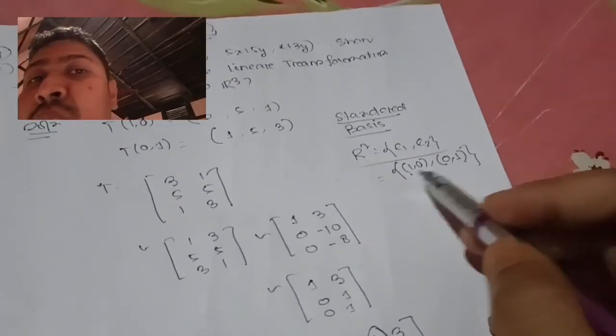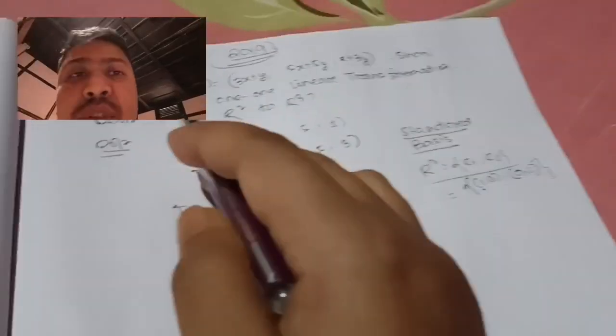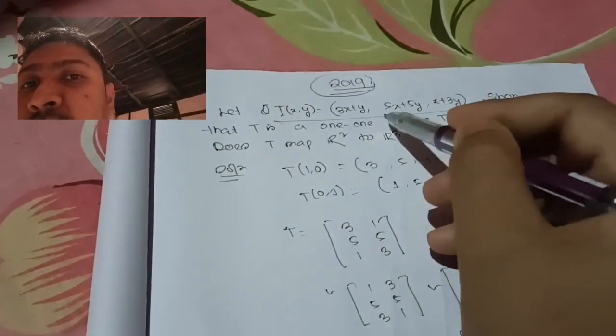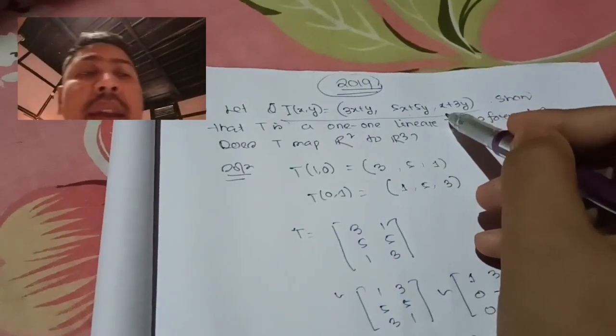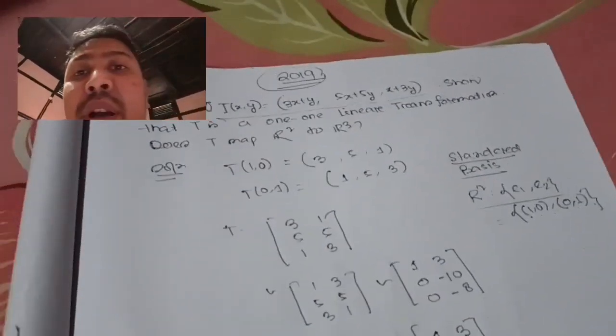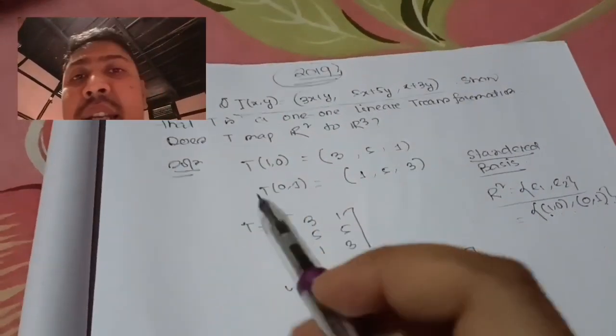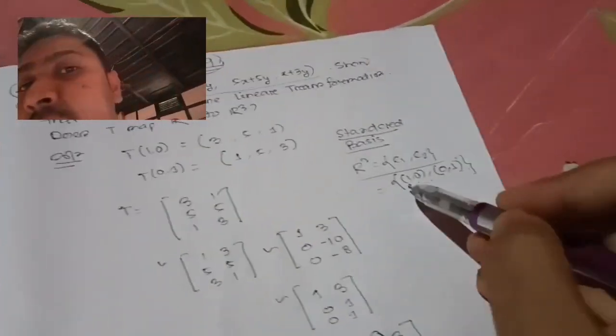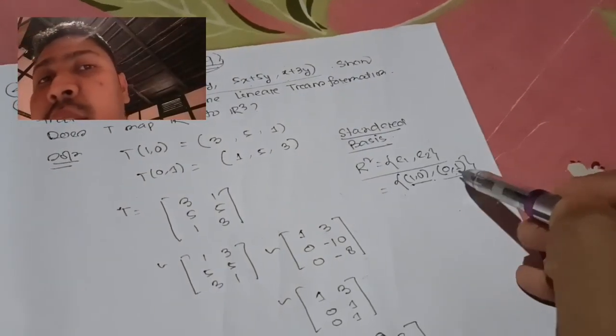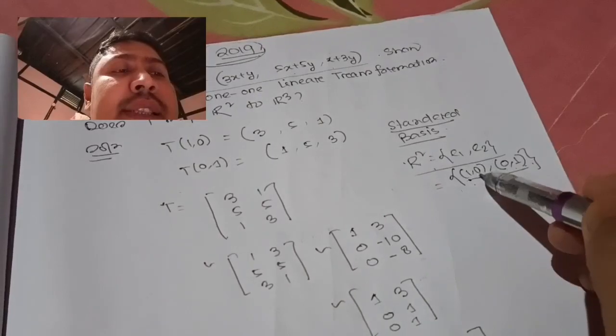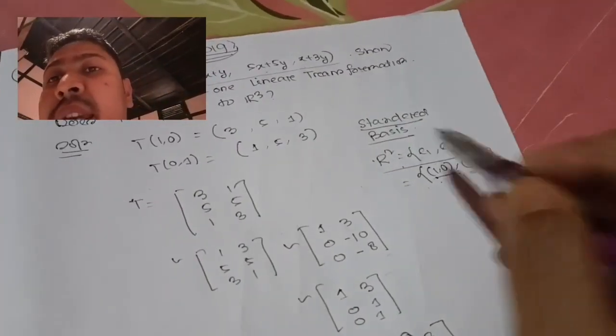Now I will apply the transformation. The given transformation is T(x,y) = (3x+y, 5x+5y, x+3y). I will create a matrix for this linear transformation. The linear transformation's standard matrix is found by putting the standard vectors.